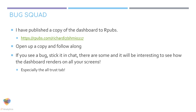There are lots of issues about sizing and bugs in the tool, so I've put a copy up on RPubs. Take down this URL: https://rpubs.com/richardi7/shmi0217. Open it up and that should take you to the dashboard. You can follow along and see how the dashboard works — and if you see a bug, stick it in chat, because there will be some. There are interesting ones about how the dashboard renders on different screens, especially the old trust tab.